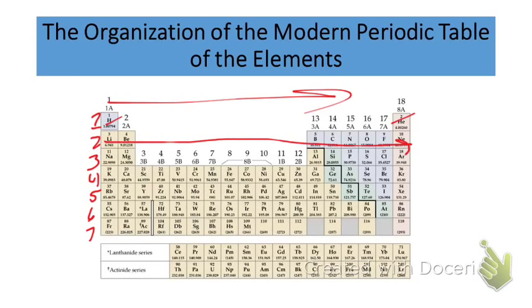Same thing with period 2. So we go across, we have an increase in atomic number from 3, 4, 5, 6, 7, 8, 9, and then 10, okay? So again, as we go left to right across a period, we're doing so by increasing atomic number. And that is how the periodic table is set and organized, okay?